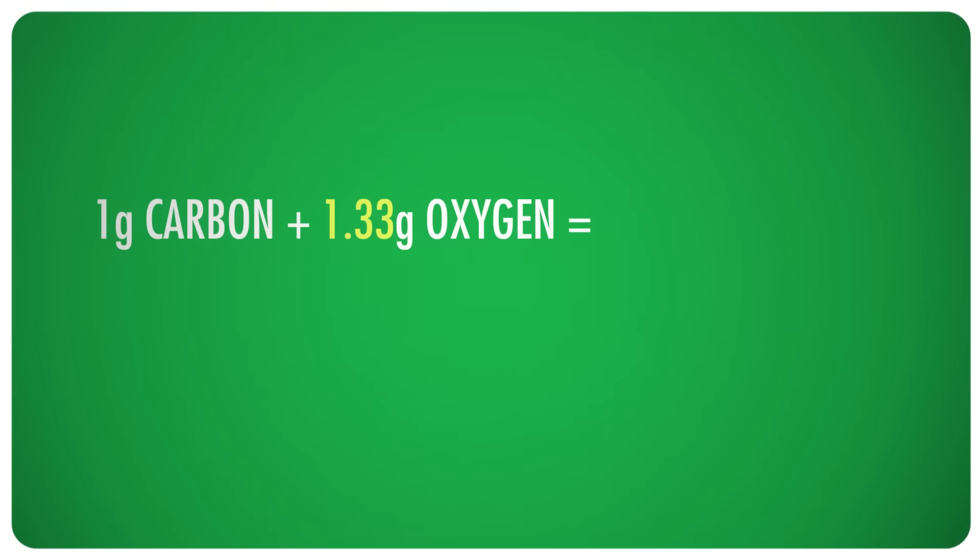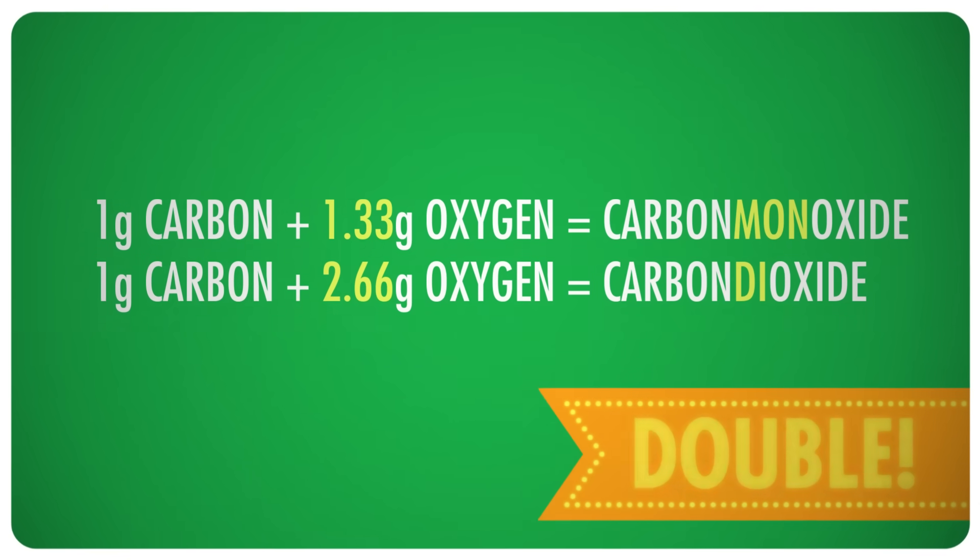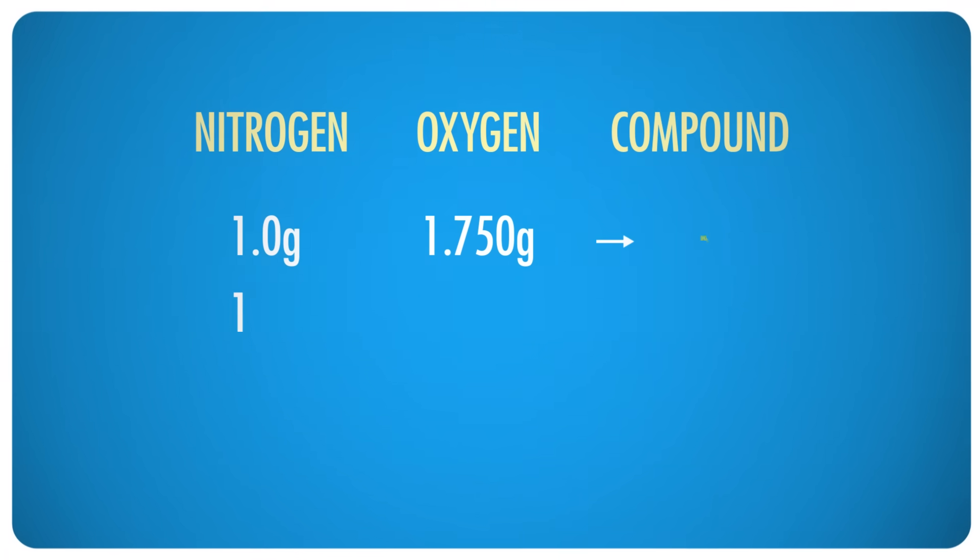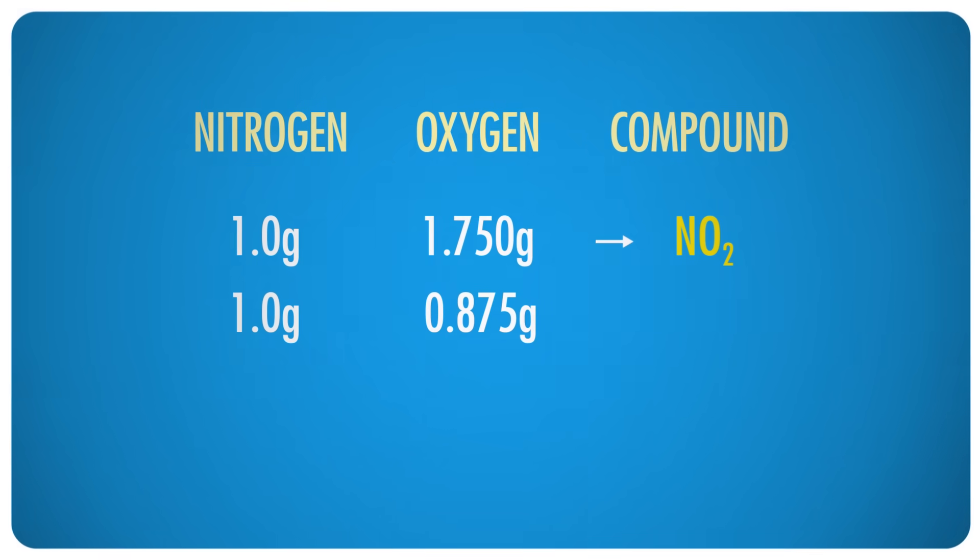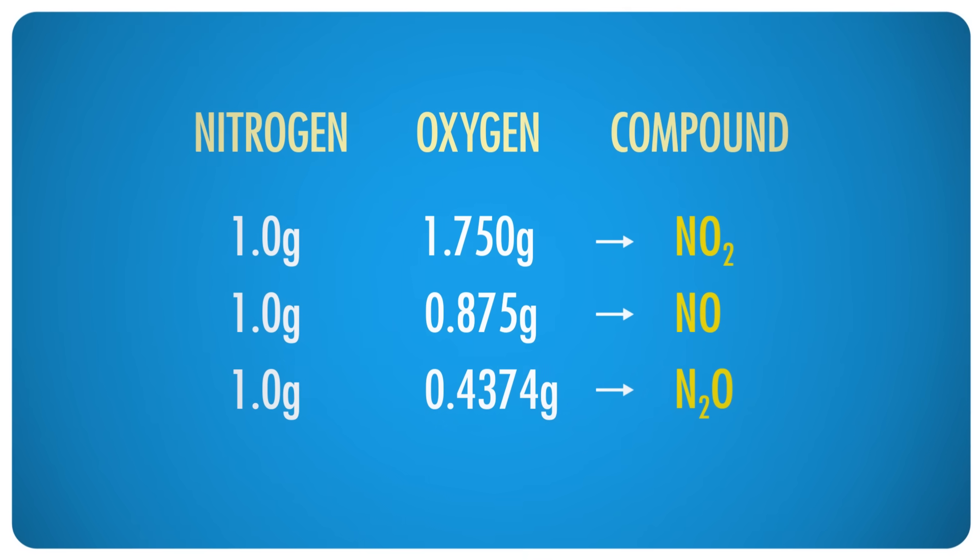If you limited the amount of carbon reacting to exactly one gram, the mass of oxygen consumed to produce one compound was 1.33 grams, while the mass consumed to produce the other compound was 2.66, exactly double what was required for the other compound. This shook out for other reactions too. When reacting nitrogen and oxygen, and limiting to exactly one gram of nitrogen, three compounds formed. One compound consumed 1.750 grams of oxygen, another consumed 0.8750 grams, and another consumed 0.4374 grams. All of those numbers are relatable by small whole number ratios.